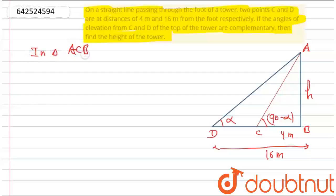In triangle ACB, by taking tan of 90 minus alpha, that will be equal to the perpendicular, which is AB, and then the base, which is CB.